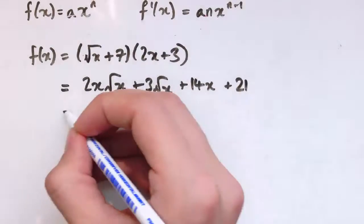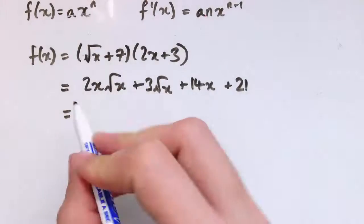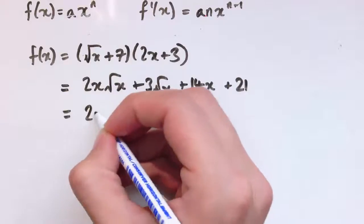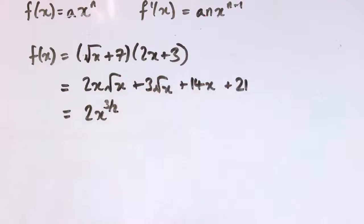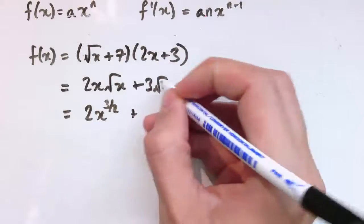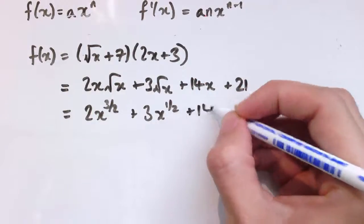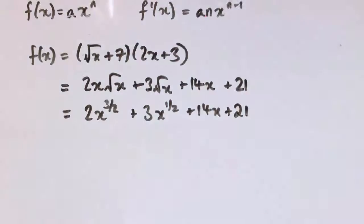And I can write these in index form. So x times root x, that's x to the 1 times x to the 1/2, so that's x to the 1 and 1/2. And I'm going to write 1 and 1/2 as 3 over 2. Root x is x to the 1/2, 14x and 21, we can just leave as they are.